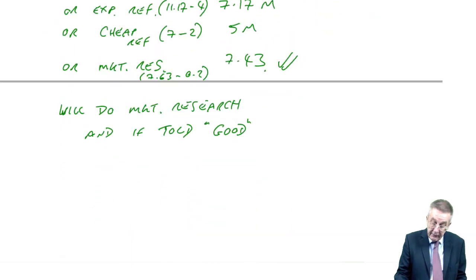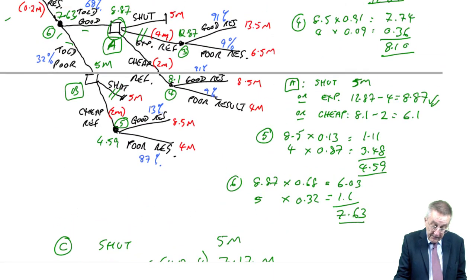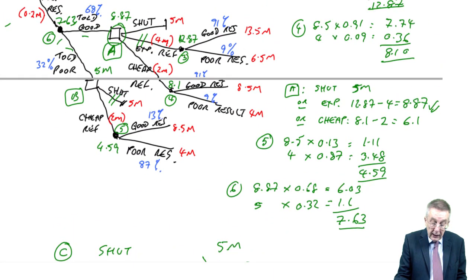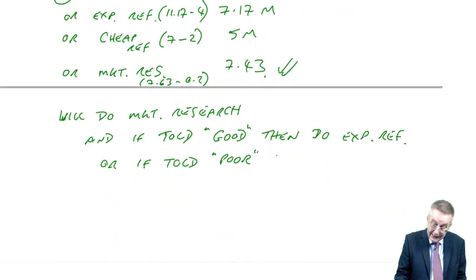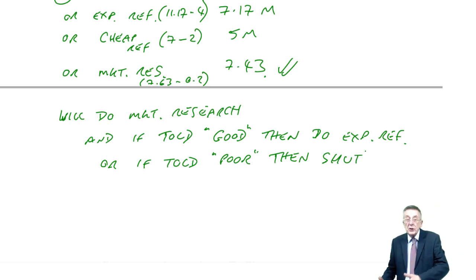We carry on and do the expensive refurbishment. Or if told poor, what will we do? If they told us poor, we decide to shut. So there's the full answer. The decision we make now, together with any future decisions.